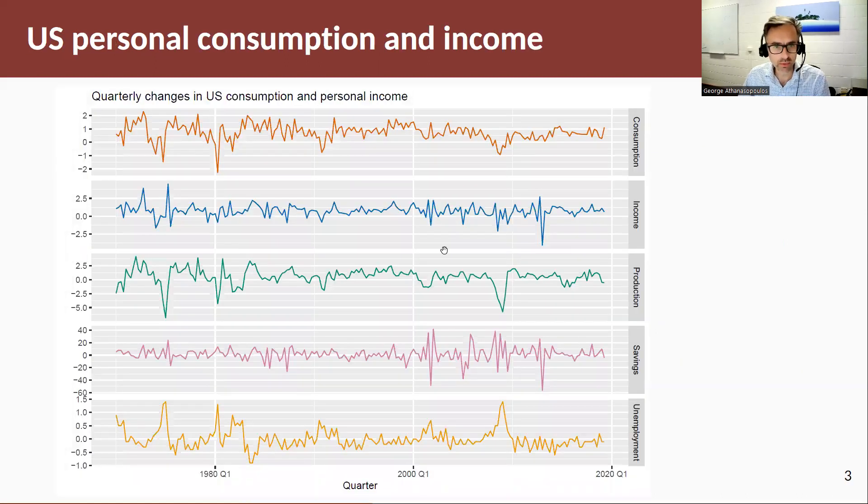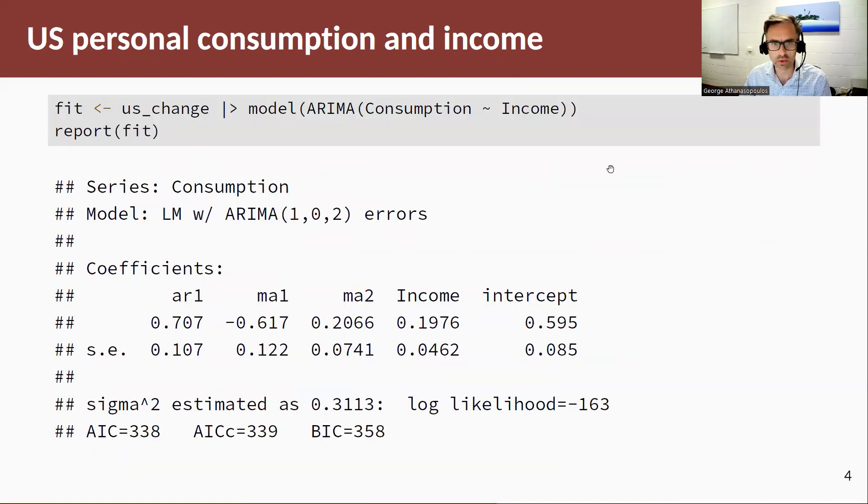Let's have a look at an example, back to the US personal consumption and income expenditure data. We're just going to do a simple regression as we started in Chapter 7. We're going to regress consumption on income, but this time we're not going to use the TSLM function, we're going to use the ARIMA function, hence if needed we'll have a dynamic regression where the error is modeled by an ARIMA process.